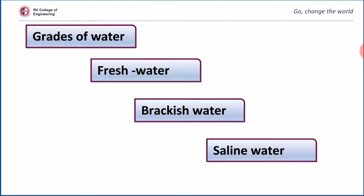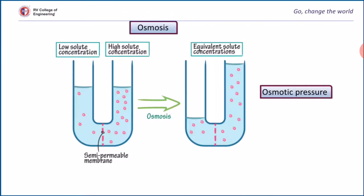Dissolved salts can be removed by various methods. One among them is reverse osmosis. First we will understand what is osmosis. When two different concentration solutions are separated by a semipermeable membrane, solvent molecules will move from lower concentration to higher concentration. This process is known as osmosis.